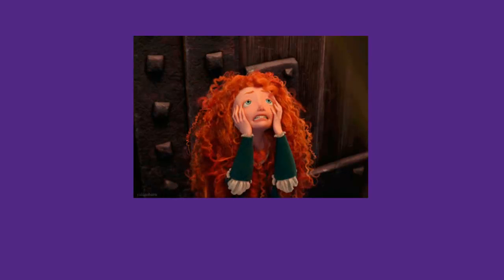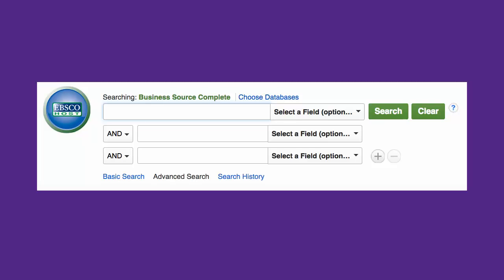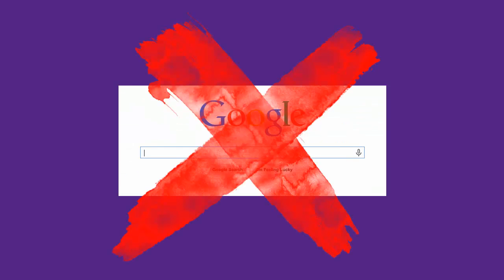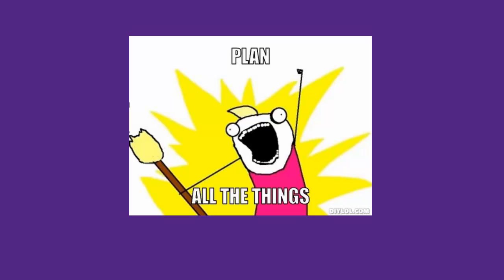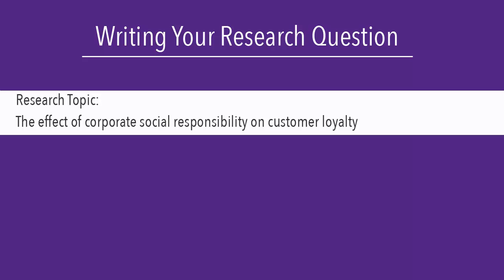It's easy to get frustrated when searching for articles in library databases because the databases do not work in exactly the same way as Google. You have to use different search techniques to find the information you need. This is why it's a good idea to plan out your search before you start looking for articles.